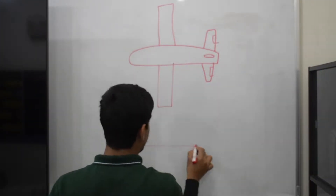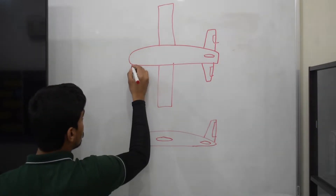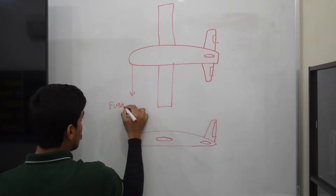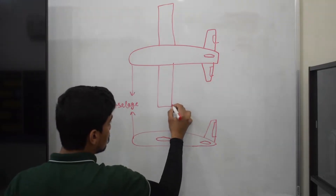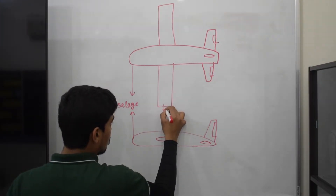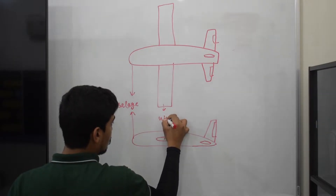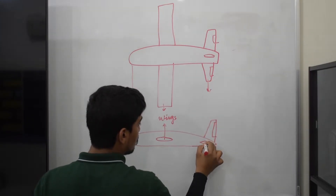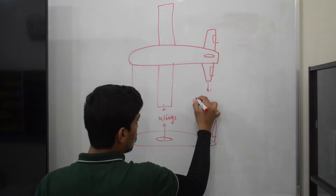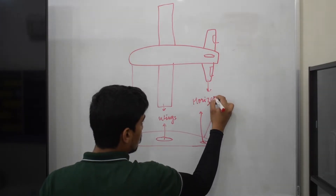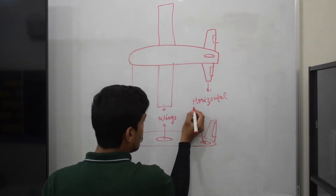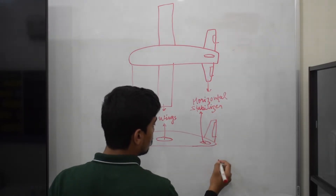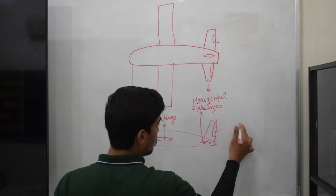Here we shall see a top view and a side view of the aircraft. The main body of the aircraft is called the fuselage. These are the wings of the aircraft. The tiny wing-like structures on the rear are the horizontal stabilizers. This steel structure is the vertical stabilizer.